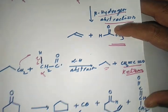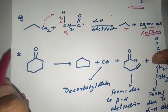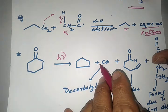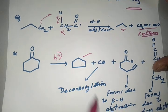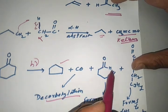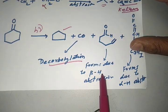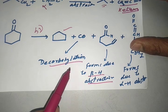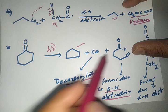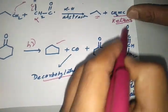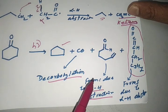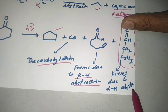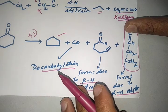For cyclohexenone, we can directly write: irradiation → singlet → intersystem crossing → triplet state → decarbonylation → cyclopentadienyl product. This product forms via beta hydrogen abstraction, where the carbonyl abstracts beta hydrogen from the adjacent carbon. Ketene formation takes place by abstraction of alpha hydrogen from the acyl radical. This is another example of the Norrish Type 1 reaction.